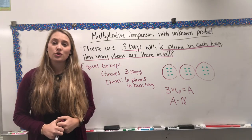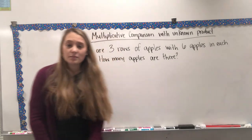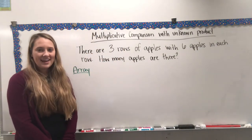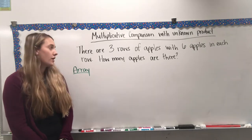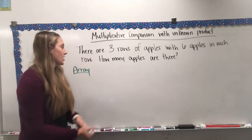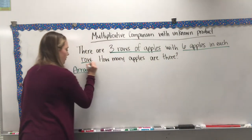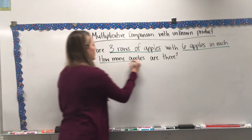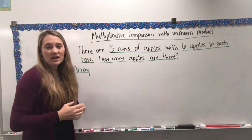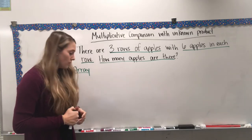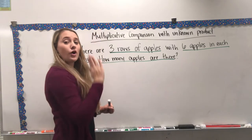Now we're going to look at arrays with an unknown product. Let's read the problem: there are three rows of apples with six apples in each row. How many apples are there? The important information is three rows of apples and six apples in each row. Remember: rows go across, and columns go down.